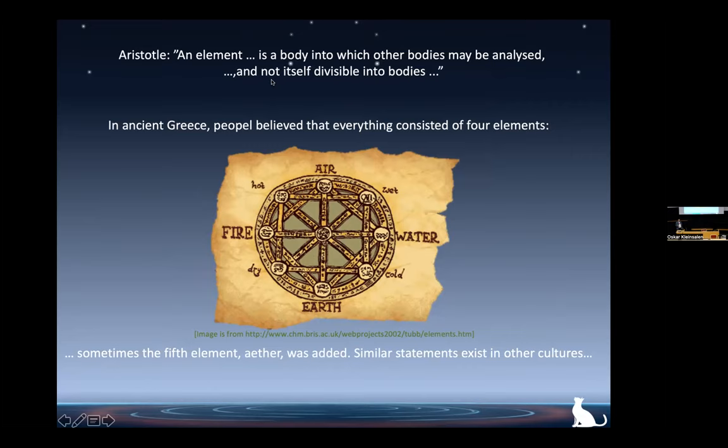Aristotle wrote that an element is a body into which other bodies may be analyzed, and which itself is not divisible into smaller parts. The word 'elementary' comes from ancient Greece and means something as small as possible. We have chemical elements at chemical energy scales, but they are not elementary at nuclear energy scales. Eventually we come to elementary particles — the best we can do in modern experiments — which will be the subject of lecture four, on quantum field theory and the search for the Higgs boson.